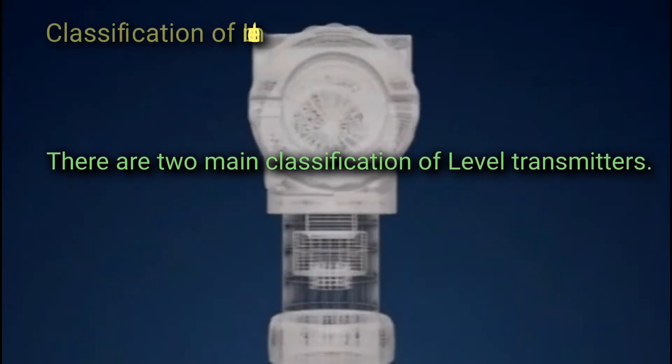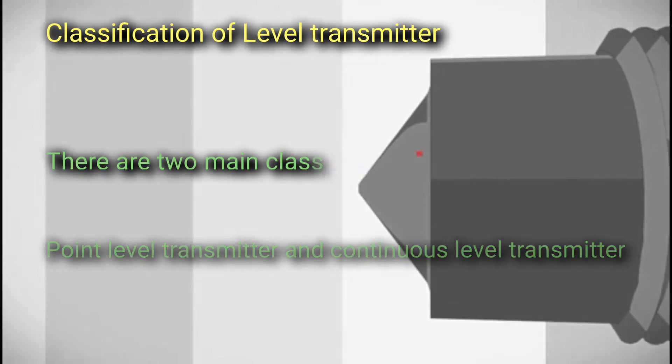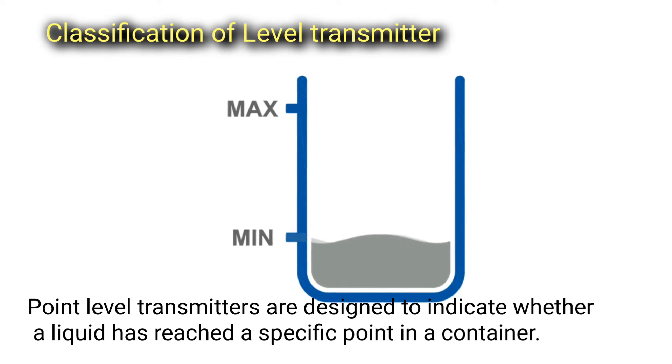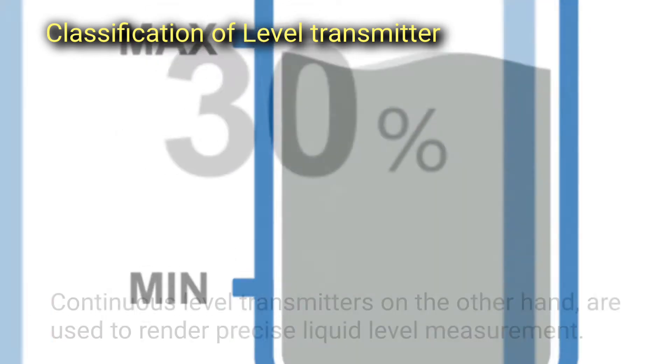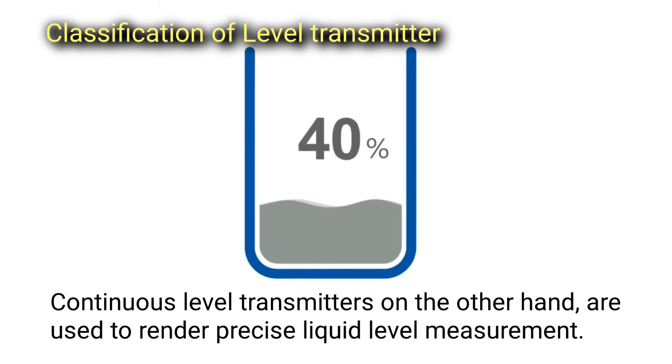There are two main classifications for Level Transmitters: Point Level Transmitters and Continuous Level Transmitters. Point Level Transmitters are designed to indicate whether a liquid has reached a specific point in a container. Continuous Level Transmitters, on the other hand, are used to render precise liquid level measurements.